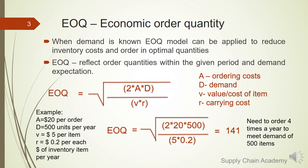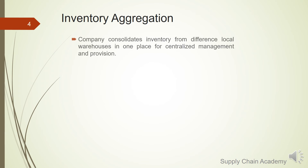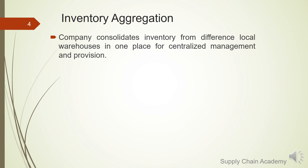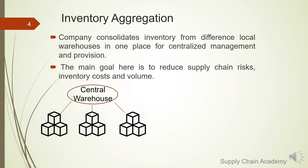Inventory aggregation is the third approach, where a company consolidates inventories from different warehouses under a single management and replenishment mechanism. The key point is to reduce risks, consolidate inventory, reduce volumes, and lower inventory costs.